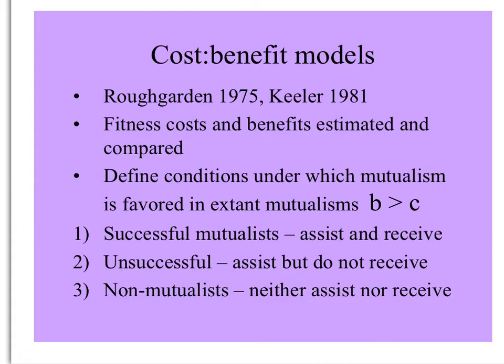There are other interesting models. Joan Roughgarden — actually when she was Jonathan Roughgarden in 1975 — came up with one, and Kathy Keeler in 1981 where fitness costs and benefits were estimated and compared. They said you needed to define conditions under which mutualism is favored, where benefits are greater than the costs.